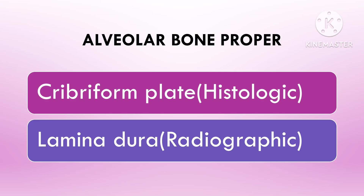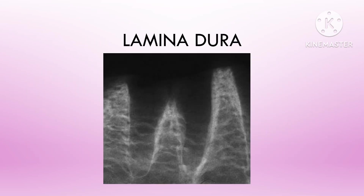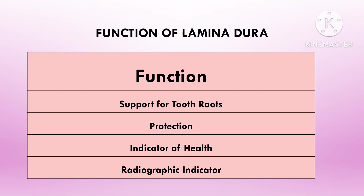Radiographically, the lamina dura refers to the dense radiopaque line seen surrounding the tooth root, which represents the bundle bone. It is a part of the cribriform plate and provides a strong interface between the tooth and the alveolar bone. Its functions include providing a stable foundation for periodontal ligament attachment, shielding tooth roots from external forces during chewing, and serving as a diagnostic tool to assess periodontal health.